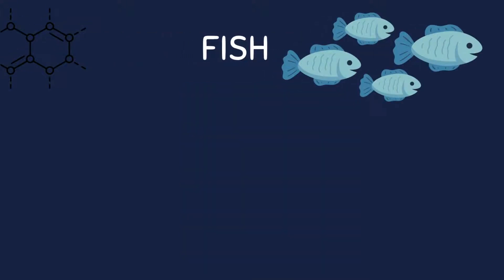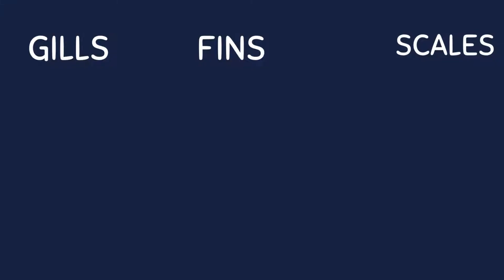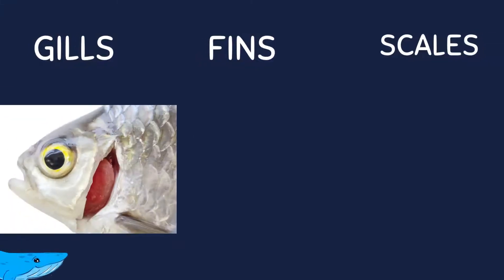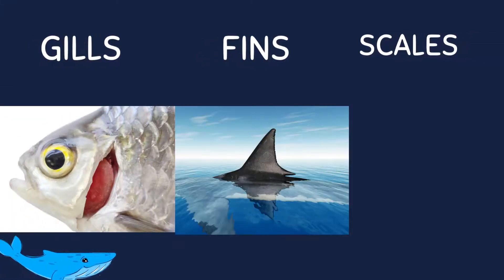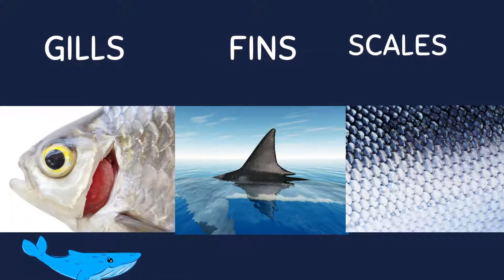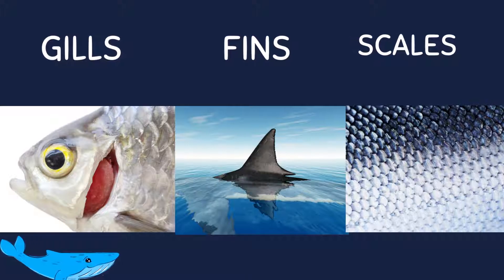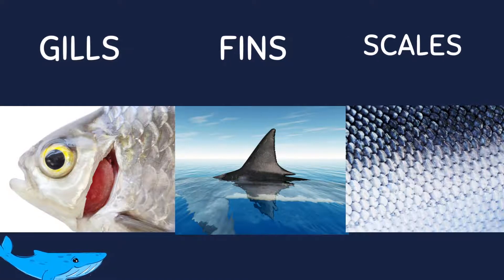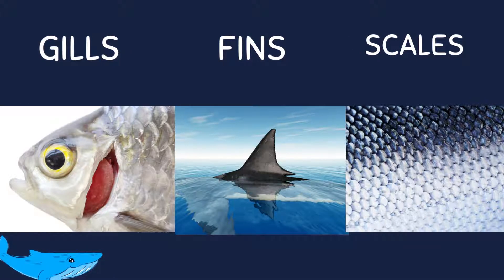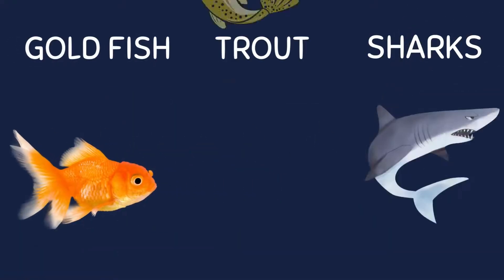Fish are aquatic animals that have gills, fins, and scales. They lay eggs and come in a variety of shapes and sizes. Some common examples of fish include goldfish, trout, and piranhas.